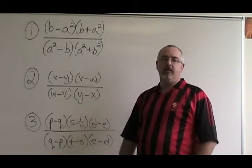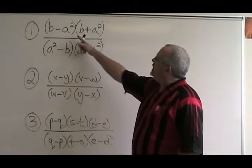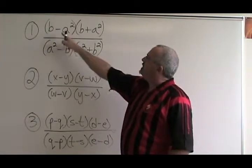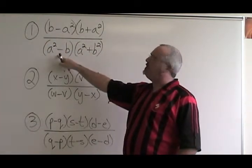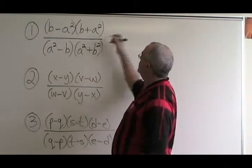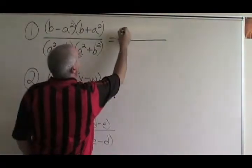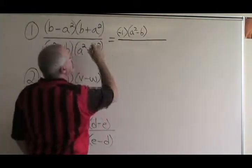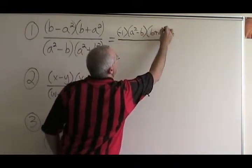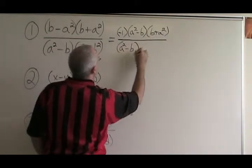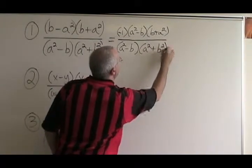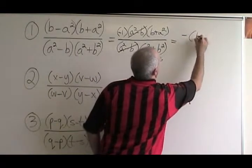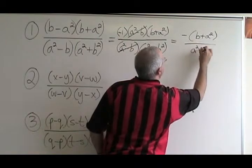Let's do some examples that involve the negative one trick. In this fraction, the only thing we might be able to cancel is b minus a squared and a squared minus b — these are the same, but only if we do the negative one trick. If I factor the negative one out of the top, it becomes negative one times a squared minus b, while b plus a squared remains the same on the bottom. Now I can cancel the a squared minus b, and my final answer is negative b plus a squared over a squared plus b squared.